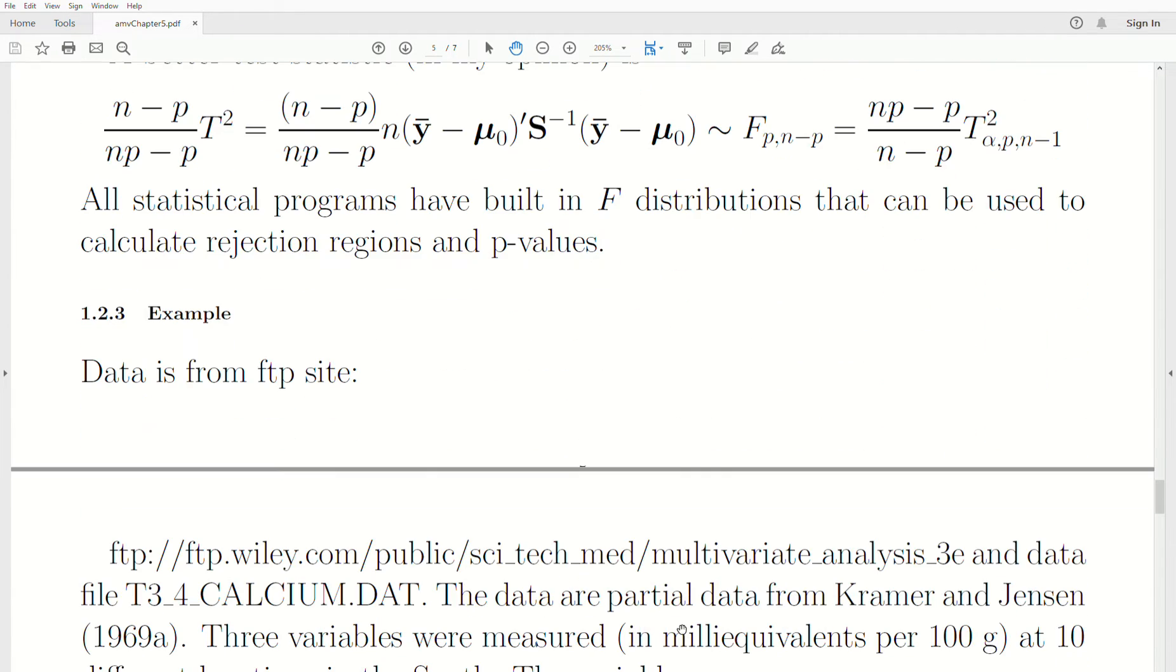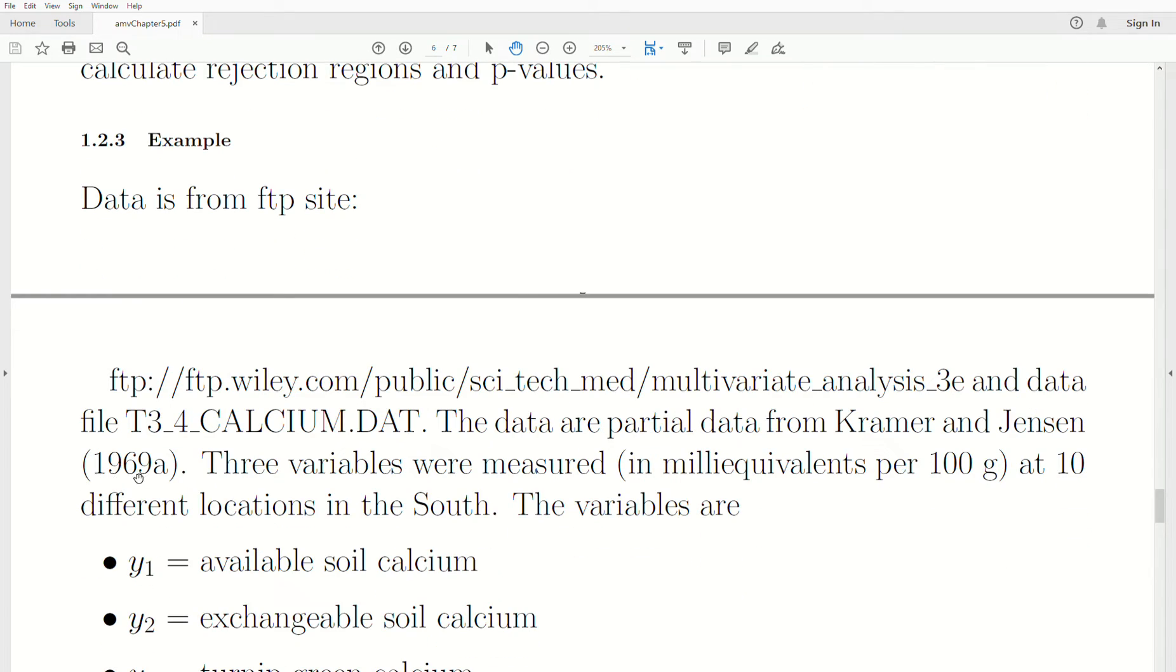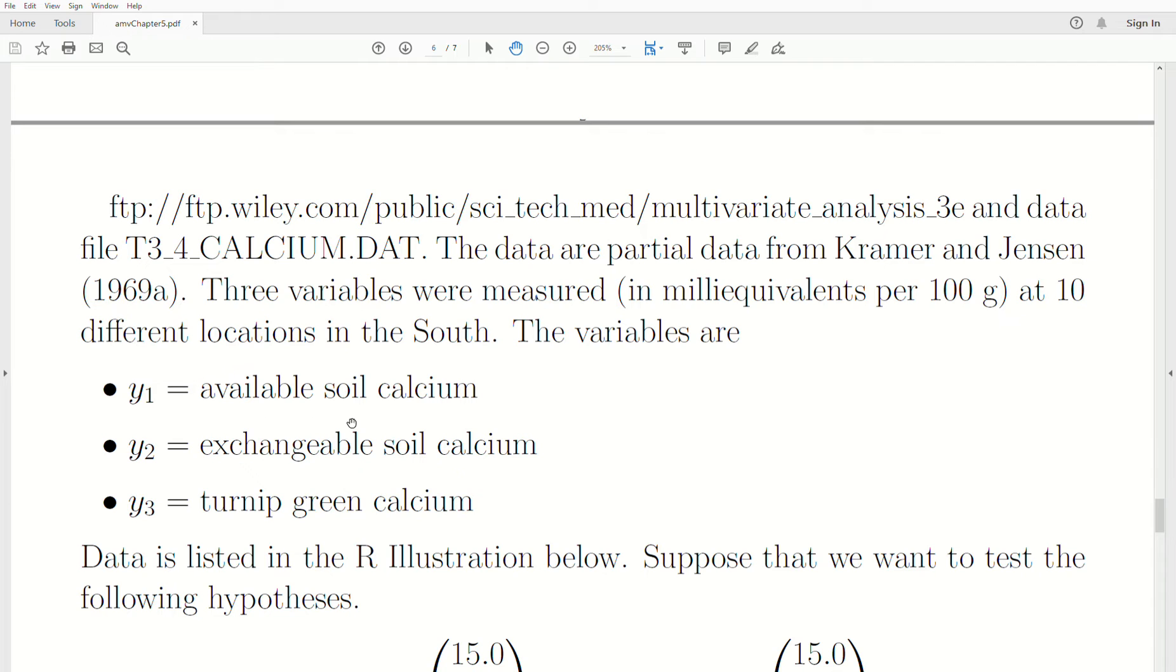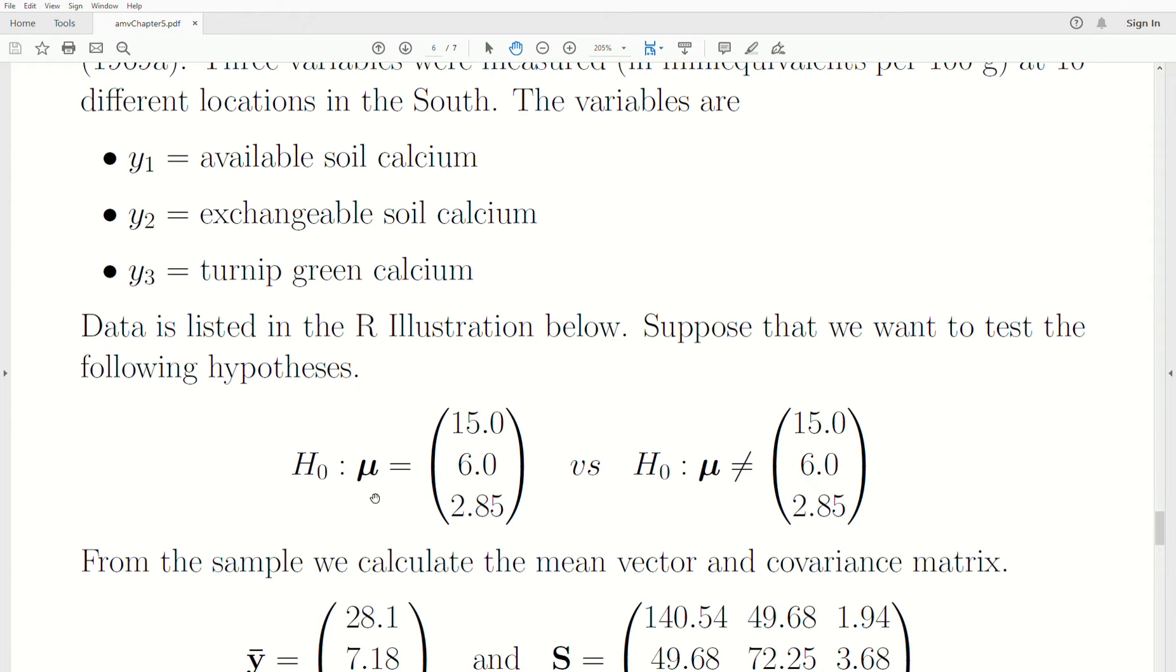Let's look at an example. The data is from an FTP site, which is given here. We're going to specifically use a data file called t-3-4-calcium.dat. The data, or partial data, from Kramer and Jensen, 1969A, three variables were measured at 10 different locations in the south. The variables were available soil calcium, exchangeable soil calcium, and Y3 was turnip green calcium. Suppose we want to test the following hypothesis, that the data has a population mean of 15, 6, and 2.8, or it doesn't.